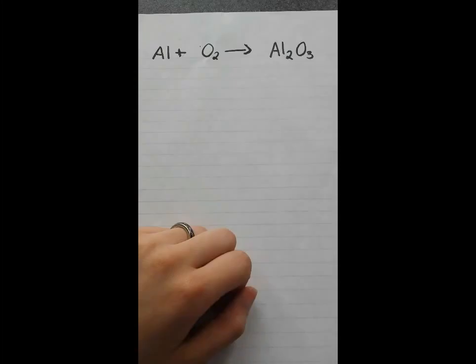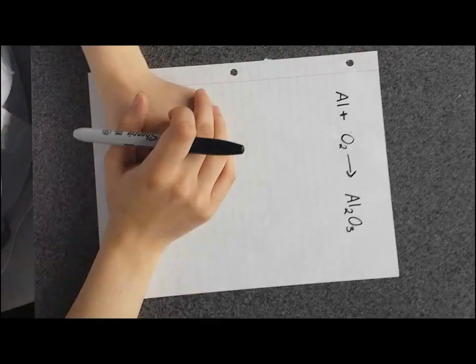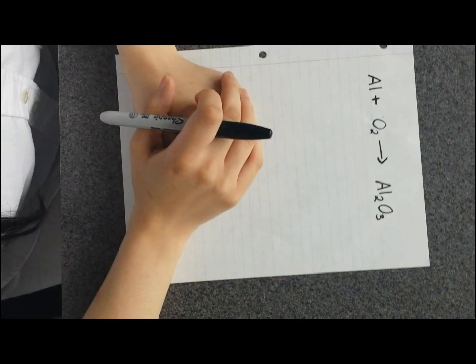In order to have a balanced equation, you need to have the same amount of atoms on the reactants side as well as the product side. In this lesson, we will be balancing equations. Here we have aluminum plus oxygen yielding aluminum trioxide.